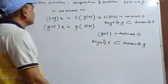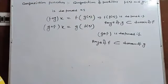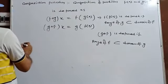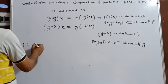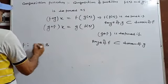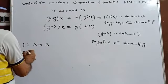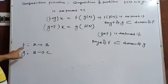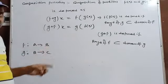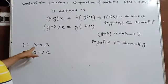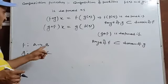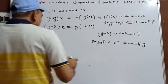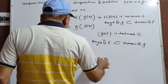Now let's understand this another way. Suppose f is a function from A to B, and g is a function from B to C. Here A is the domain and B is the co-domain.